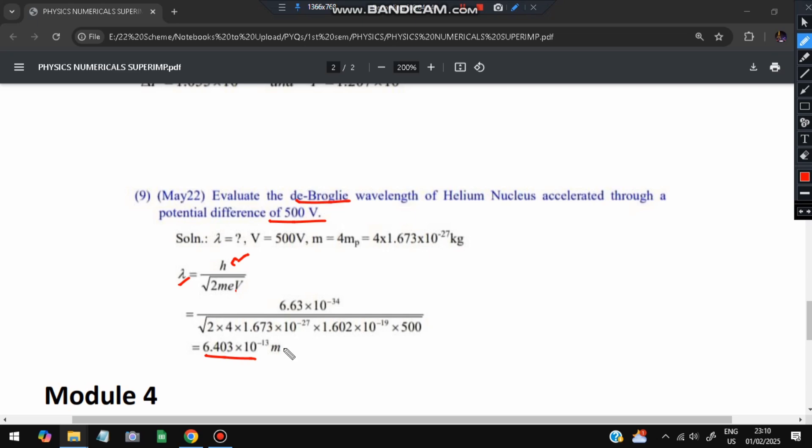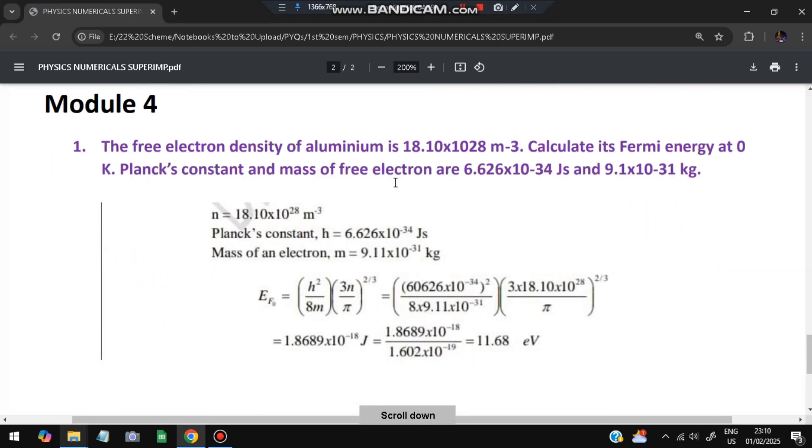Moving on to module 4, the most important and repeated one is related to Fermi energy. Module 4 has a lot related to Fermi energy. Here, what is given to us: the density of aluminum is given, and the temperature is given at 0 Kelvin. Planck's constant and mass of electron are also given. We need to calculate the Fermi energy. The formula of Fermi energy is (h²/8m)(3n/π)^(2/3).